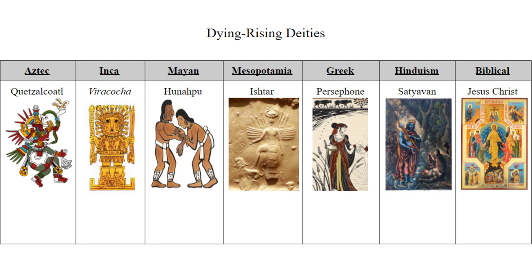Next is the dying rising deity motif — a resurrection motif in which the deity experiences a death and a resurrection of sorts. Ishtar, Quetzalcoatl, Hunahpu, and Shiva have all died and been resurrected in some sense of the word. Interestingly, Viracocha is on this list because during the Spanish conquest of Peru he was conflated with Jesus Christ, who is the biblical example. Persephone, while not necessarily a deity that died and was resurrected, has her cycle with the seasons — going into the underworld for some seasons to be with her husband Hades and then returning and bringing forth the spring — which counts as a dying rising motif.